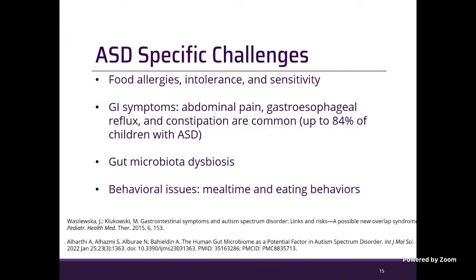I'm going to talk about specific challenges this population might have, especially related to food and diet. There are common food allergies, food intolerances, and sensitivities known for this population, and GI symptoms are very common — especially constipation. Up to 84 percent of children with ASD are reported to have constipation, and recent research shows that gut microbiota dysbiosis is very common.